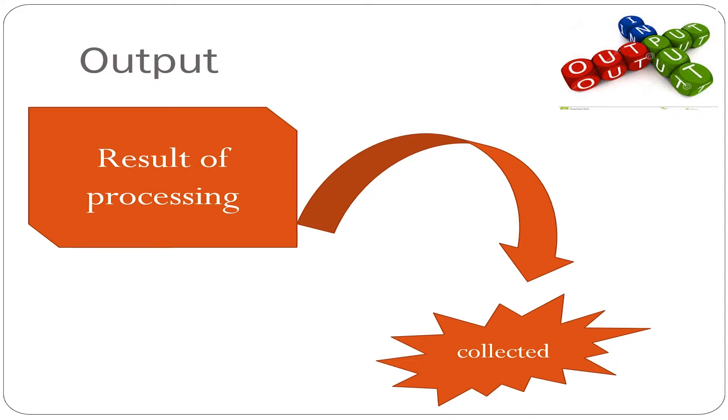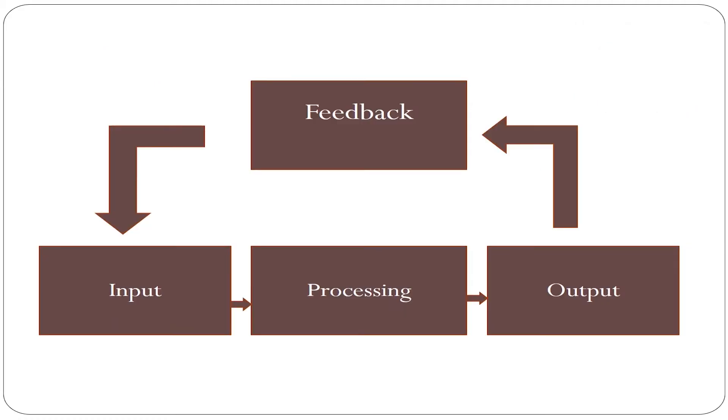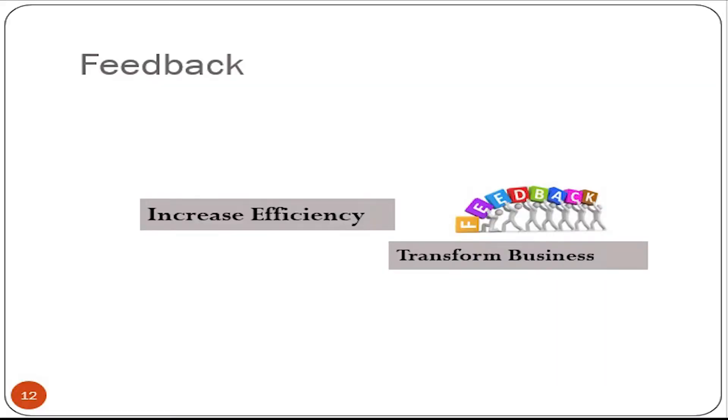Information systems also require feedback, which is output that is returned to appropriate members of the organization to help them evaluate or correct the input stage. Let's look at how information systems enhance business processes. They do this in two ways: one, by increasing the efficiency of existing processes; two, by enabling new processes that can transform the business.